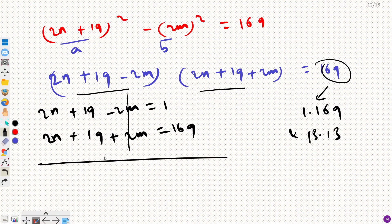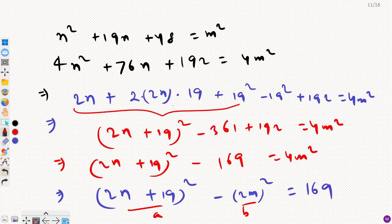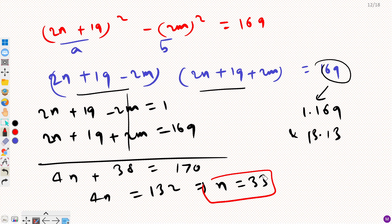Adding the two equations in Case 1: 4n plus 38 equals 170, so 4n equals 132, giving n equals 33. Now checking the condition: n must be a positive integer. We got n equals 33, so we can accept this. We don't need to find m since it was just an assumed variable.